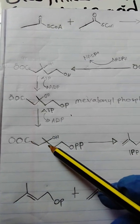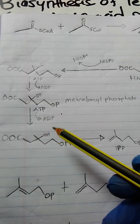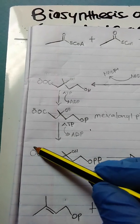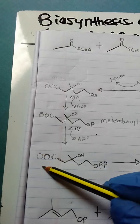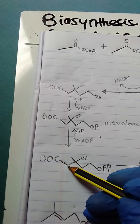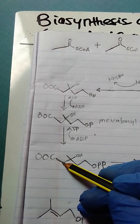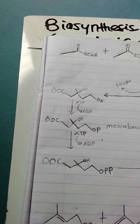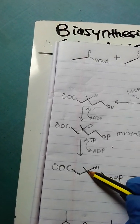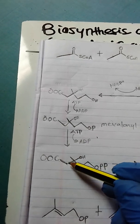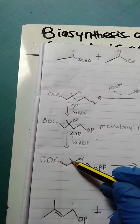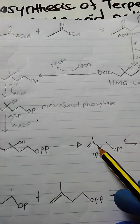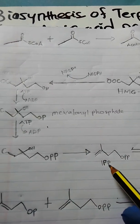From the mevalonic pyrophosphate, there is a decarboxylation reaction as well as dehydration. This carboxylate group will go off so that we create a net charge on this carbon. Then the tertiary hydroxyl also goes off so that we create a net charge here. Since we have two charges here, these two carbons can then undergo reaction to form a double bond, giving us IPP — isopentenyl pyrophosphate.